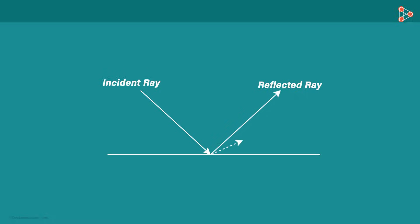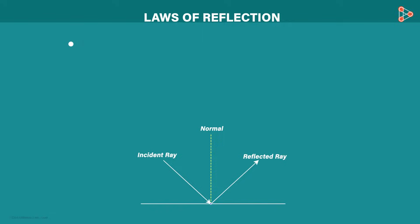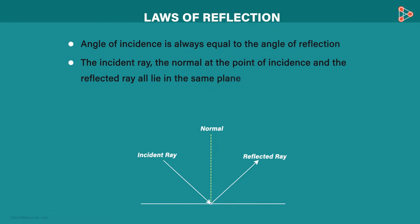Why only in this direction? Why not here or here? This is because rays of light obey certain laws of reflection when they strike any surface. Draw a perpendicular to this surface at the point of incidence. This line is also called normal. Here are the two laws of reflection that any light ray obeys.